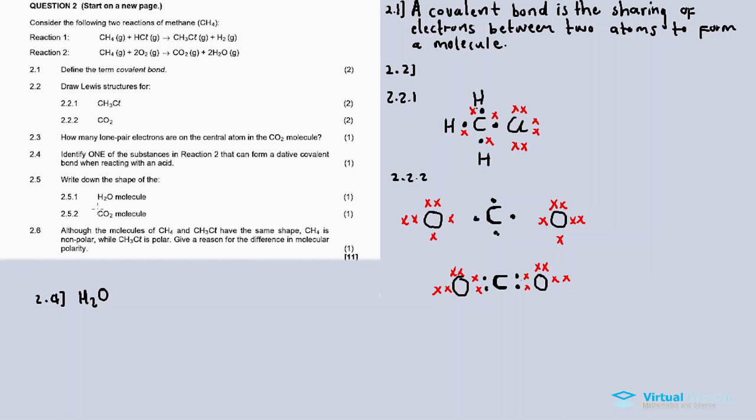2.5 asks to write down the shape of the water molecule and the carbon dioxide molecule. For 2.5.1, for water H2O, we have an angular shape. Why? Because of the lone pair electrons. Using the theory called the VSEPR theory, there's a table that shows the common shapes. H2O has lone pair electrons, so it has two covalent bonds. The lone pair shifts the bond to form an angular-like shape.